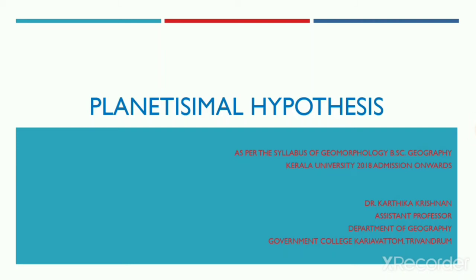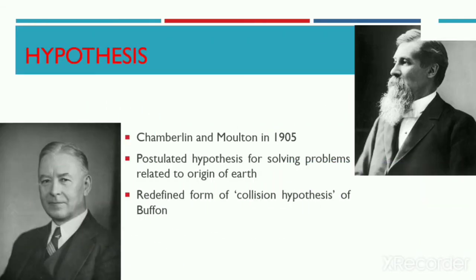Hello everyone, welcome back to geomorphology. Today we will look into the planetesimal hypothesis regarding the origin of our solar system. The planetesimal hypothesis was postulated by Chamberlain and Moulton in the year 1905. Chamberlain, who is a geologist, and Moulton, who is an astronomer, postulated this hypothesis basically to solve the problem relating to the origin of Earth. This hypothesis was a redefined form of the earlier collision hypothesis of Buffon.